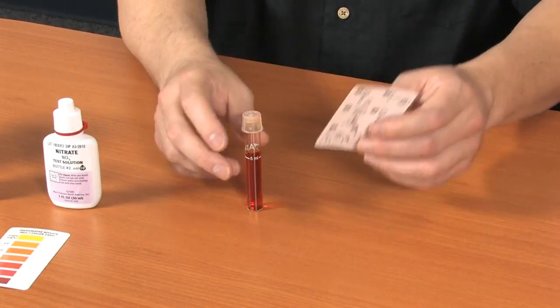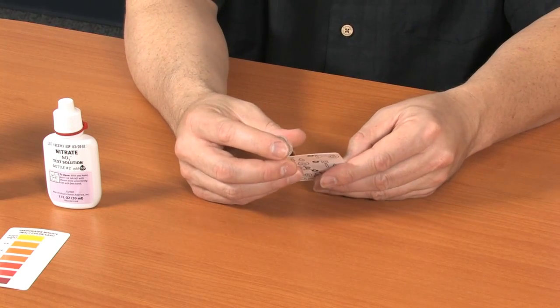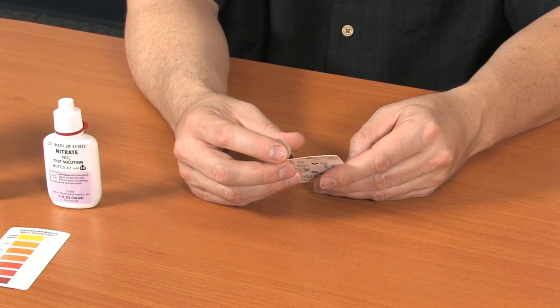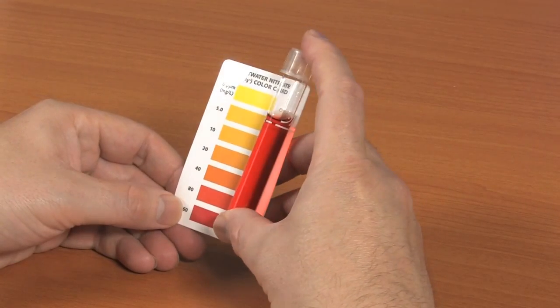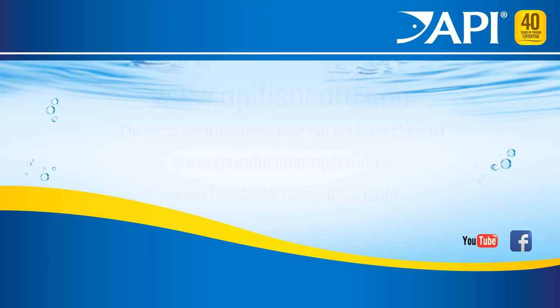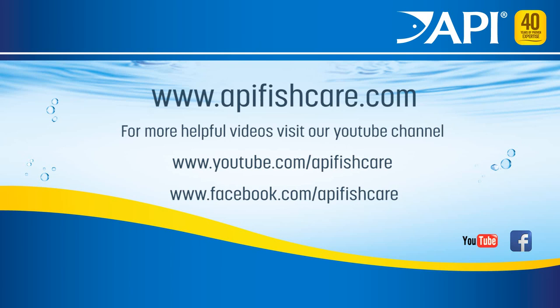After five minutes, hold the test tube against the color chart. Use the appropriate card for your type of aquarium. The closest color match indicates the nitrate test level. For more helpful videos, visit the API FishCare YouTube channel.